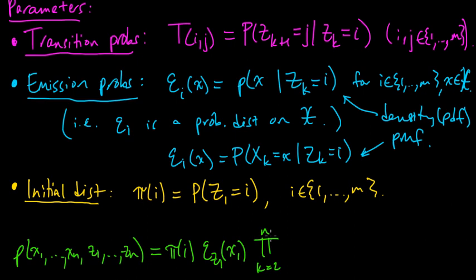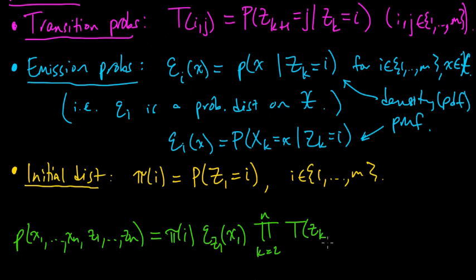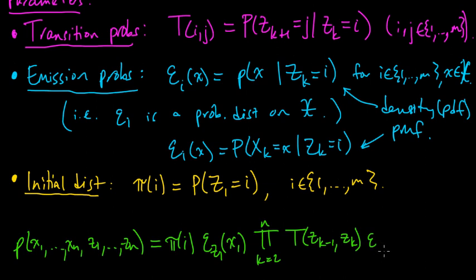So this is going to be Epsilon Z1 of X1 times the product as K goes from 2 to N of the transition probability. So it's T of, what's the first one? Is it ZK or ZK minus 1? ZK minus 1, sorry. ZK minus 1 to ZK. And then we have the emission probability.